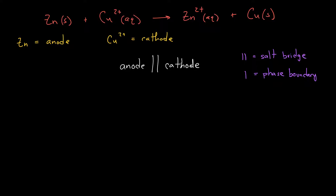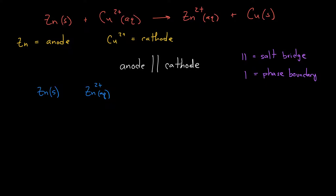We write down the reaction that happens at the anode on the left. In this case, zinc solid goes to zinc two-plus aqueous. Because these are two different phases — solid and aqueous — we replace the arrow with a single line representing the phase boundary. So we have zinc solid, single line, zinc two-plus aqueous. That's all that's happening at the anode, so next we write the double lines representing the salt bridge.